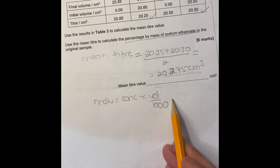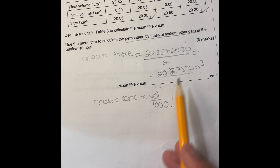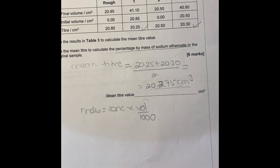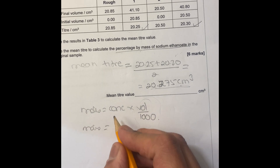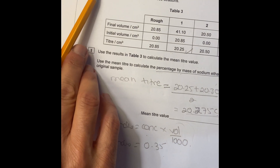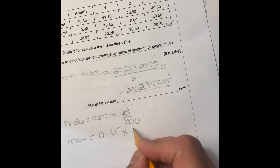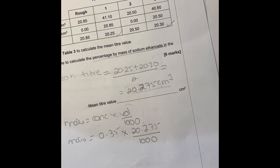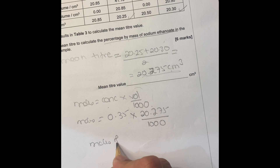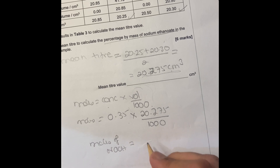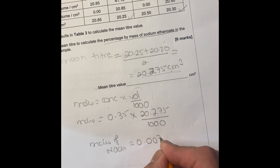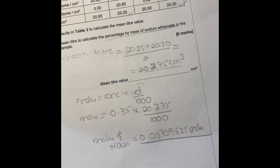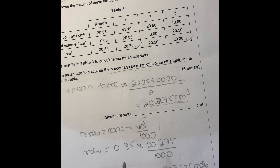Moles of sodium hydroxide: moles equals concentration times volume divided by 1000. We divide by 1000 because volume is in cm³ and we need to convert to dm³ to match the concentration in mol dm⁻³. So moles equals 0.35 times 20.275 divided by 1000, which gives 0.00709625 moles of sodium hydroxide. This is in 25 cm³.